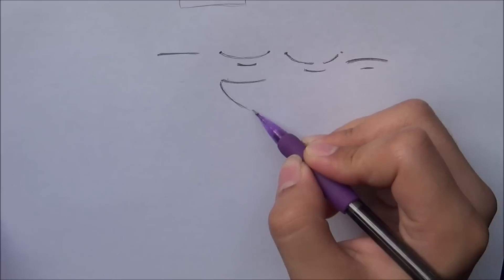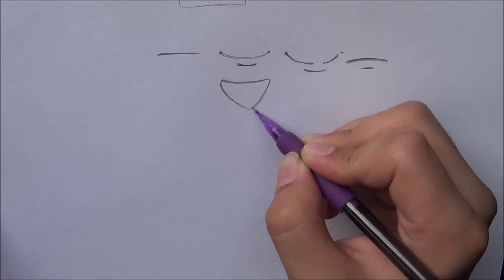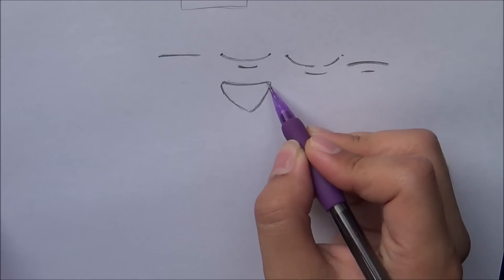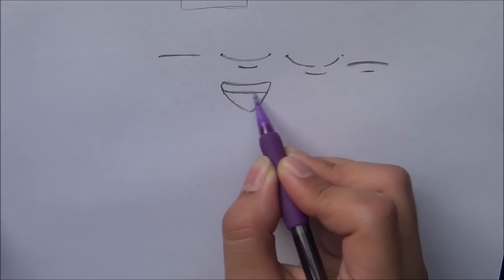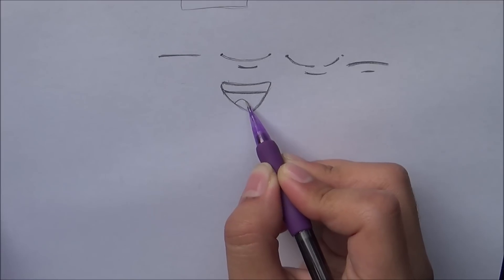So we get a triangle. There we are. And draw the teeth. And guys, this is how to draw for beginners, so I'm keeping it really basic.